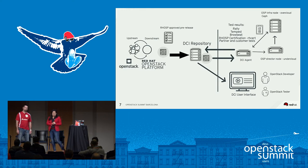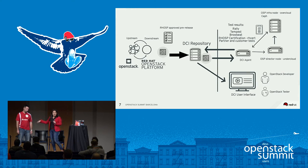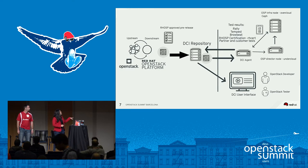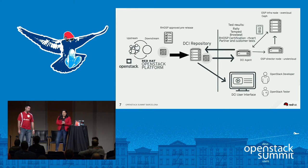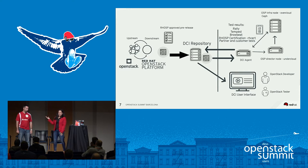Here's what DCI looks like today. From the left-hand side of the screen it's the upstream and Red Hat environment. We consume code from upstream from the OpenStack Foundation — I just updated to the new logo catching up right after the keynote — and we port it from upstream to create our downstream repos.